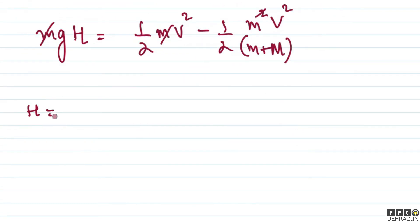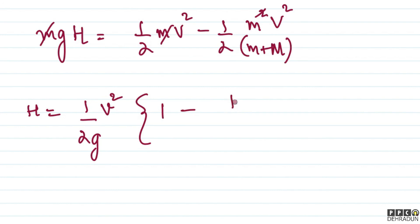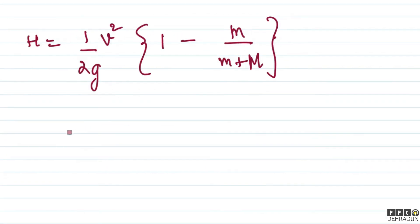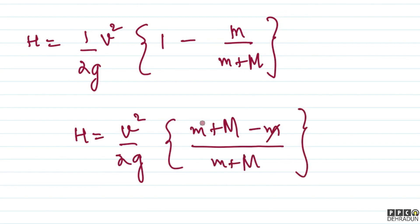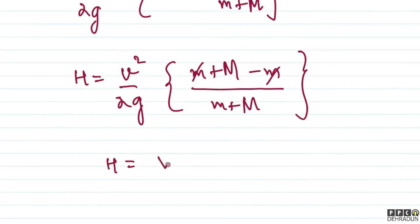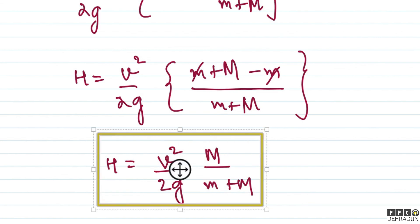So from here, h = v²/(2g) × [1 − m/(m + M)]. Simplifying the bracket: (m + M − m)/(m + M) = M/(m + M). Therefore, h = v²/(2g) × M/(m + M), which gives the final answer: h = Mv²/[2g(m + M)]. This is our final answer.